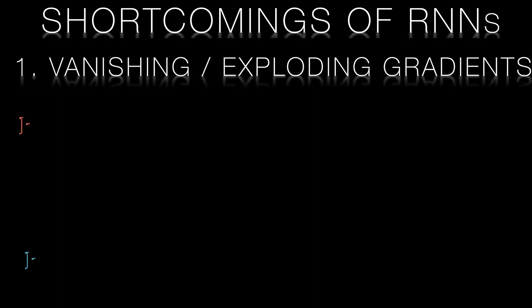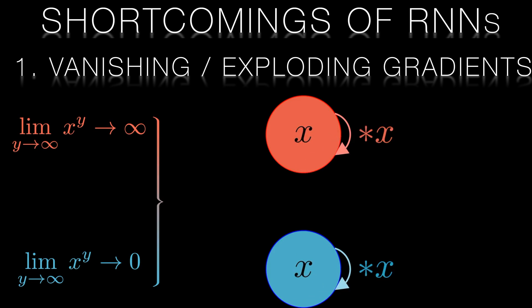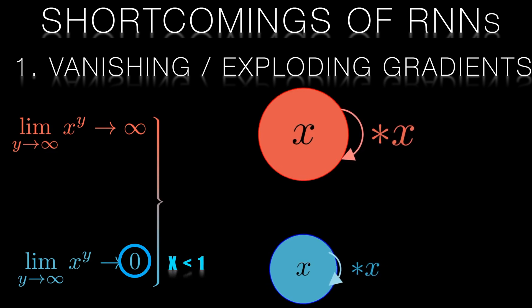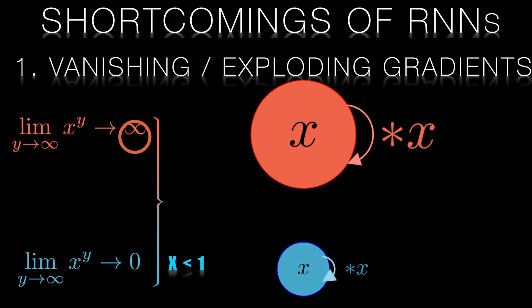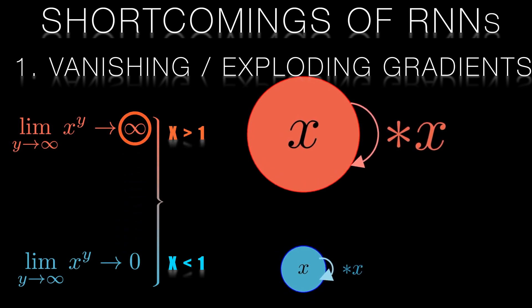As the network learns, the inherent feedback loops generate gradients that can become too small or too large, impeding learning. The problem with feedback is that it's inherently unstable. If you keep multiplying a number by itself enough times, it either goes to zero if it's less than one or to infinity if it's greater than one. This problem is particularly severe in deep networks or when dealing with long sequences.